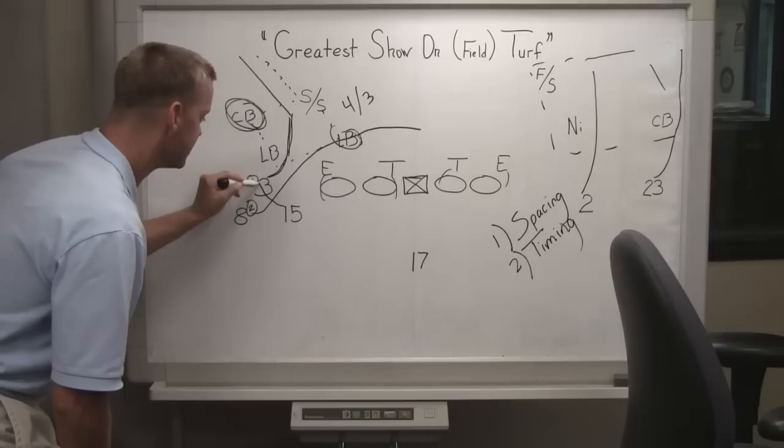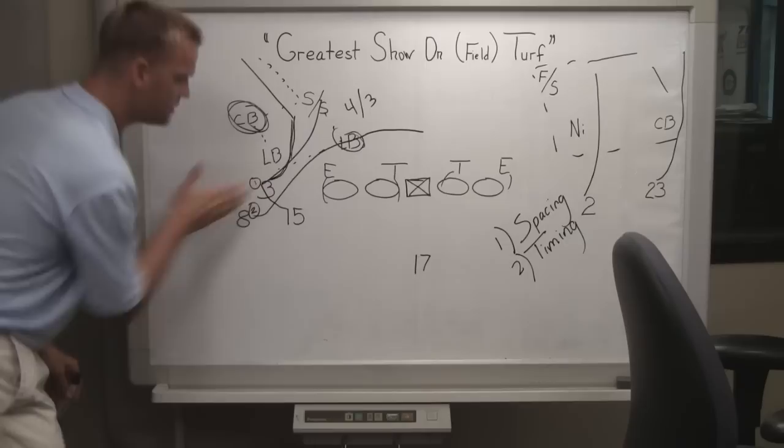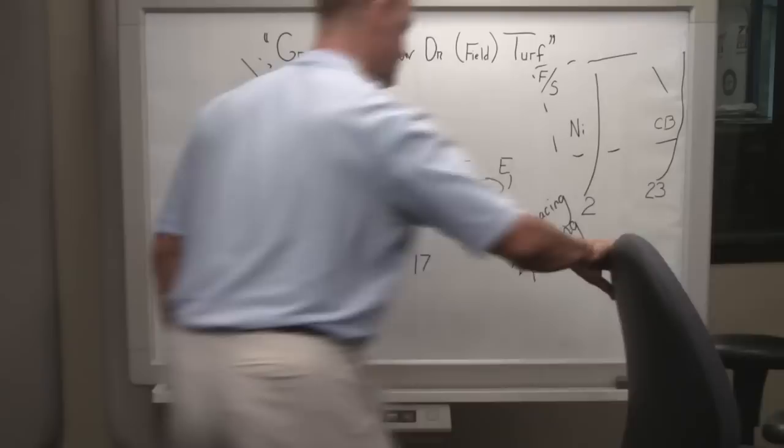And that's that little slant route. The ability to come underneath, to influence the linebacker, cross his face, Keith Price hits it. So ultimately, spacing, timing, and the precision. And you combine those three elements, and three can beat four nearly every time.